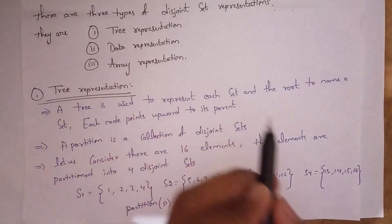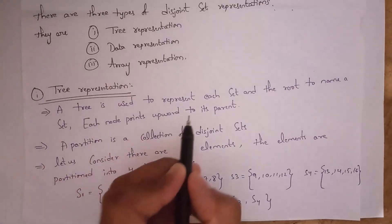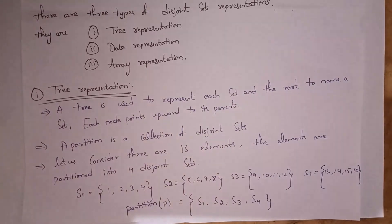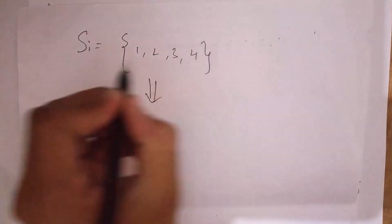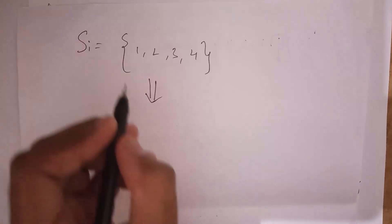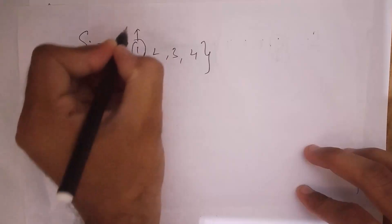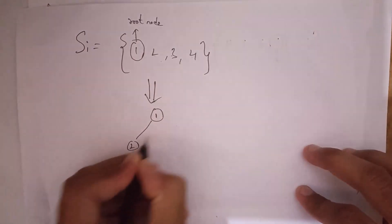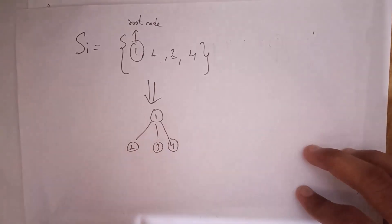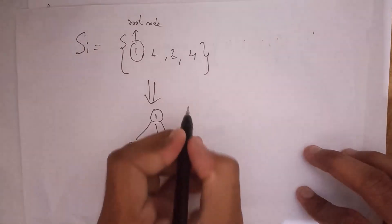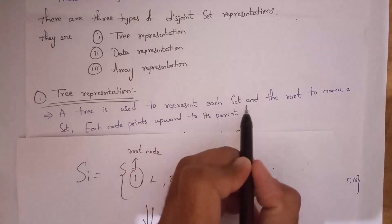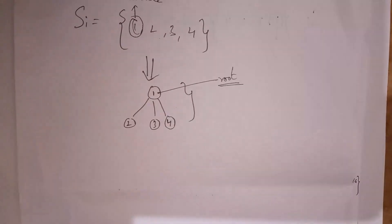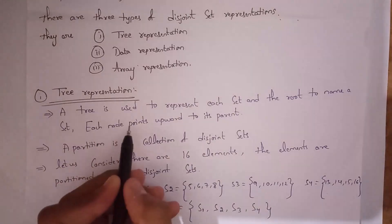A tree is used to represent each set, and the root names the set. Each node points upward to its parent. For example, for disjoint set Si = {1, 2, 3, 4}, consider the first element 1 as the root node, and 2, 3, 4 are connected to this root node as children. So 1 is the parent. Note that not only the first element — you can take any element as the root node.